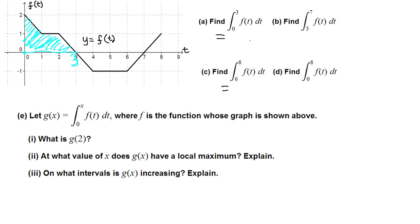This is a unit square, so this area is 1, another unit square is 1, and this will be just a half, and here's another half — so that's 1 plus 1 plus half plus half equals 3. This integral is 3.